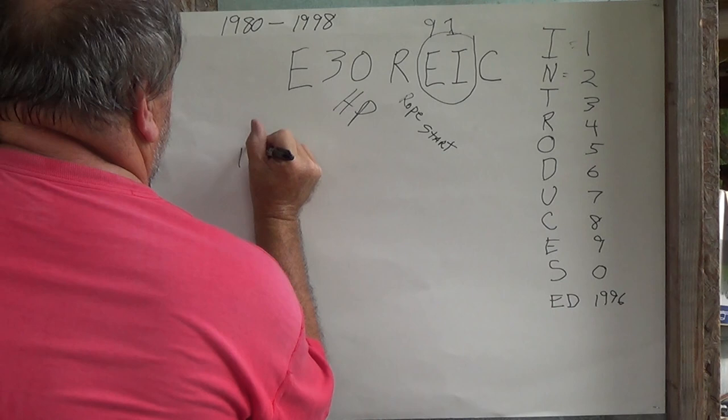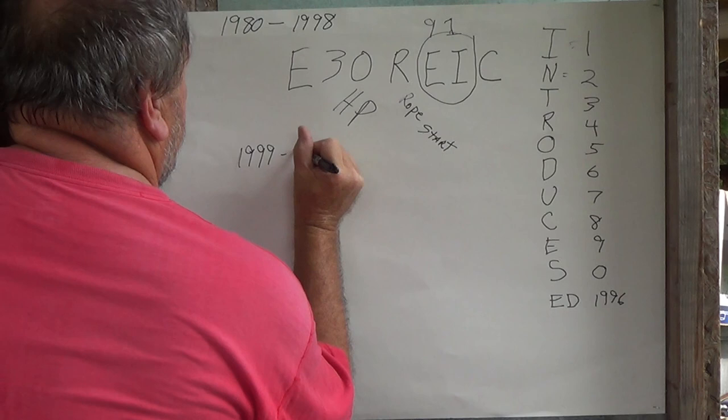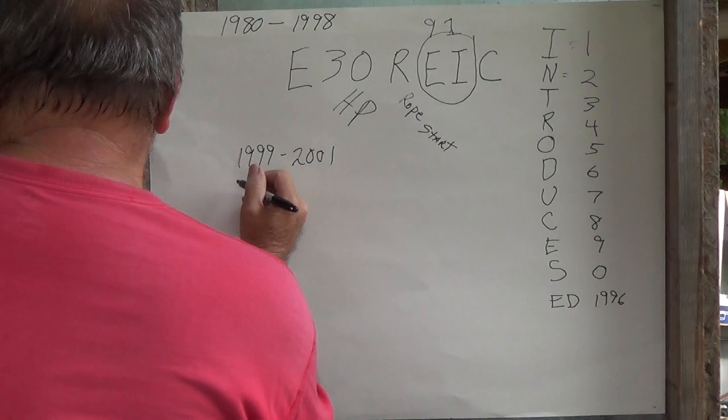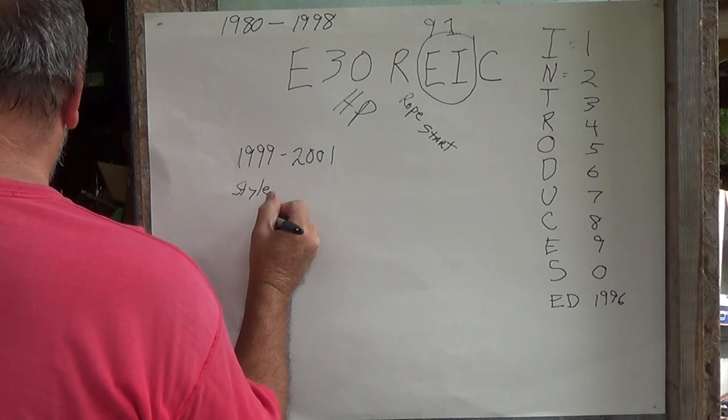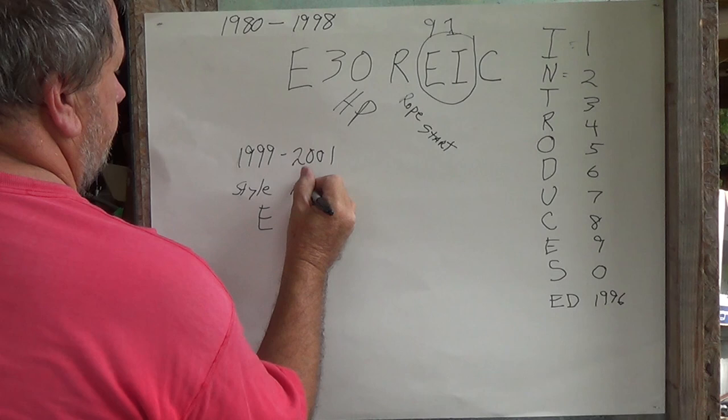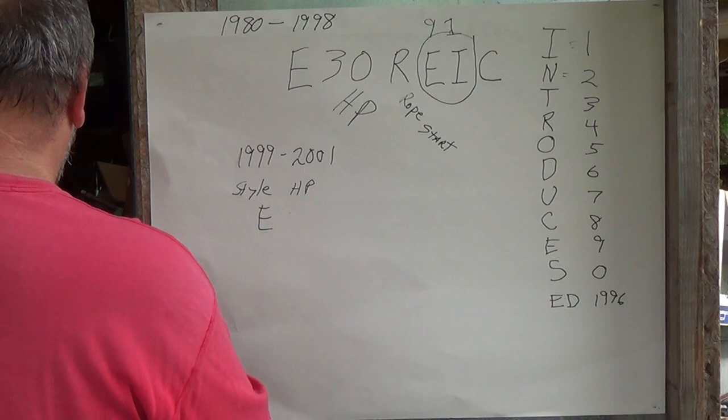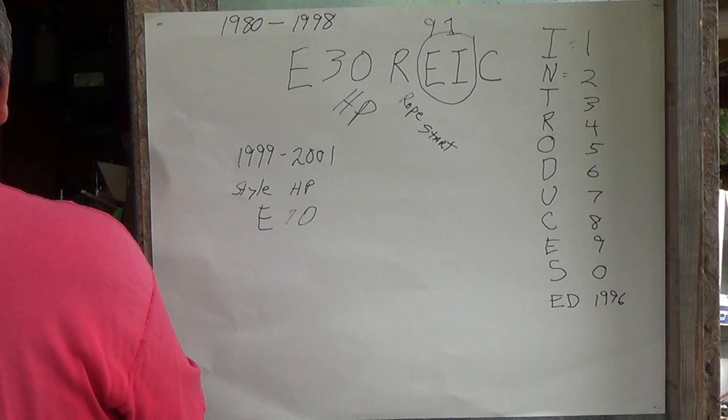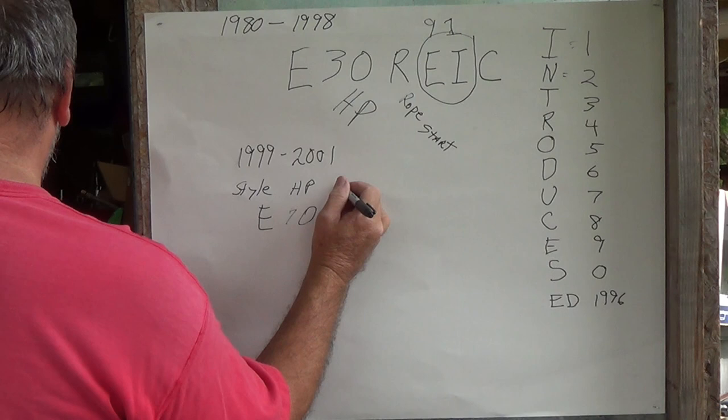If you have a model 1999 to 2001, your style is going to be, you know, the letter, then the horsepower is going to be here, whether it be a 70 or whatever. Then you're going to have your design features here.